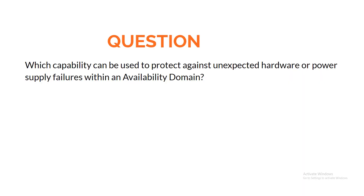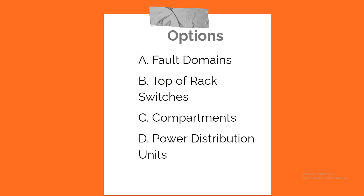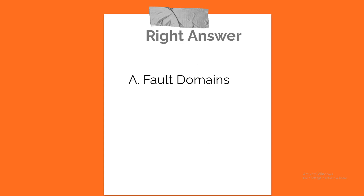Question. Which capability can be used to protect against unexpected hardware or power supply failures within an availability domain? A. Fault Domains. B. Top of Rack Switches. C. Compartments. D. Power Distribution Units. Correct answer: A. Fault Domains.